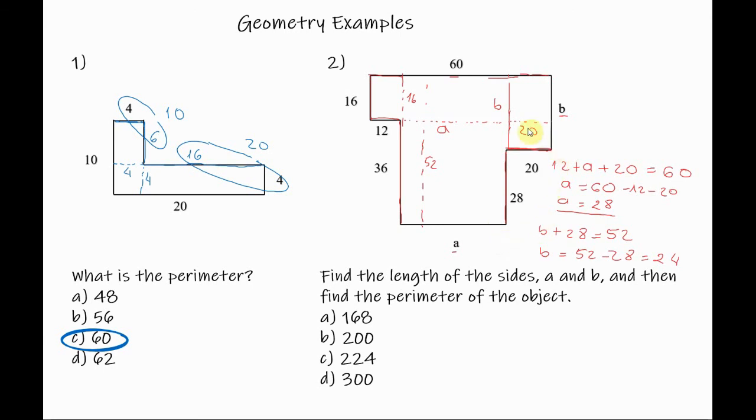So if we add all these numbers here we will get the final result which is 60 plus B is 24, plus 20 plus 28 plus 28 plus 36 plus 12 plus 16. So this is equal to 224. So the answer is C, 224.